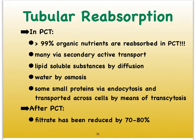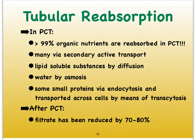Water will always move by osmosis — a form of passive transport. Lipids can easily pass through the phospholipid bilayer of the cell membrane, so they can move by diffusion assuming there is a good enough gradient. Small proteins that might have snuck through the filtration membrane can be reabsorbed by endocytosis and then transported across the cuboidal cell by transcytosis — carried in a little vesicle. By the time the filtrate leaves the proximal convoluted tubule to enter the loop of Henle, it has been reduced by 70 to 80 percent.